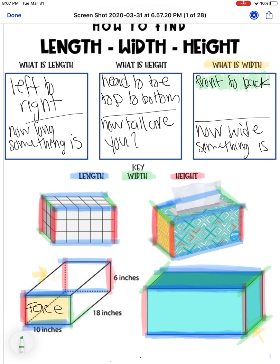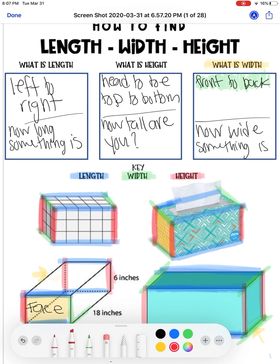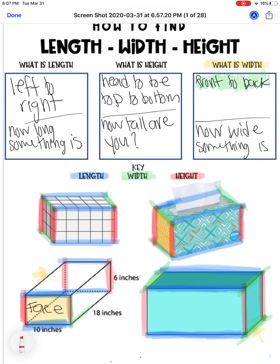So now width, again, think front to back. I know, I know, I know I colored this the wrong color. Very good. Front to back. So front to back or the lines that are just left over front to back and front to back. So now we've identified length, width, and height of all of our rectangular prisms.